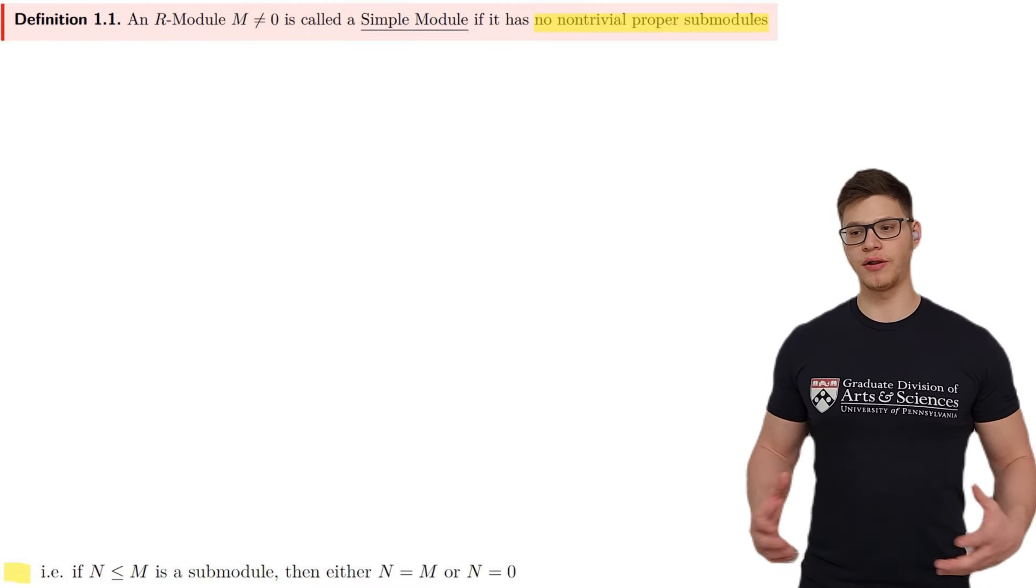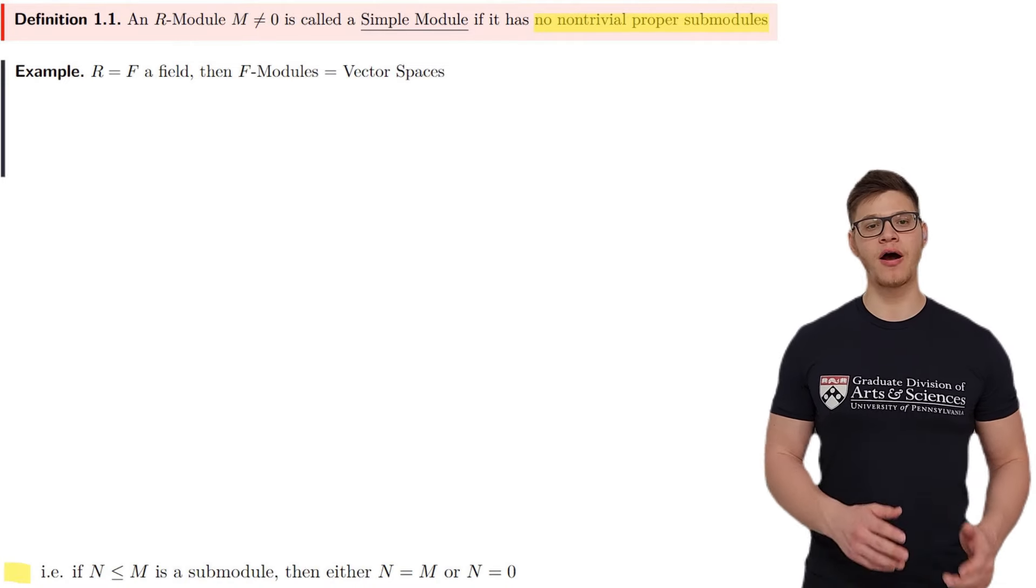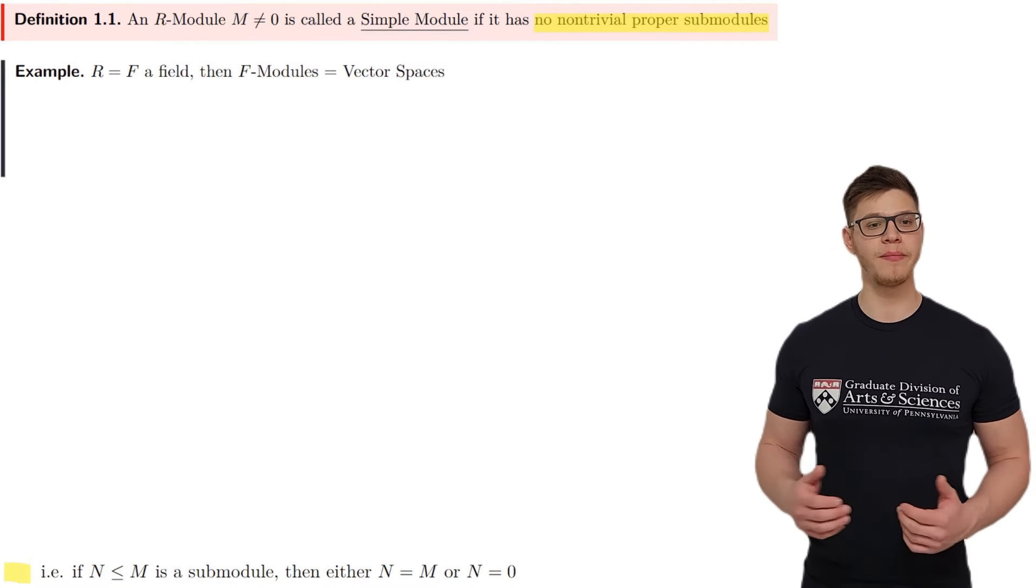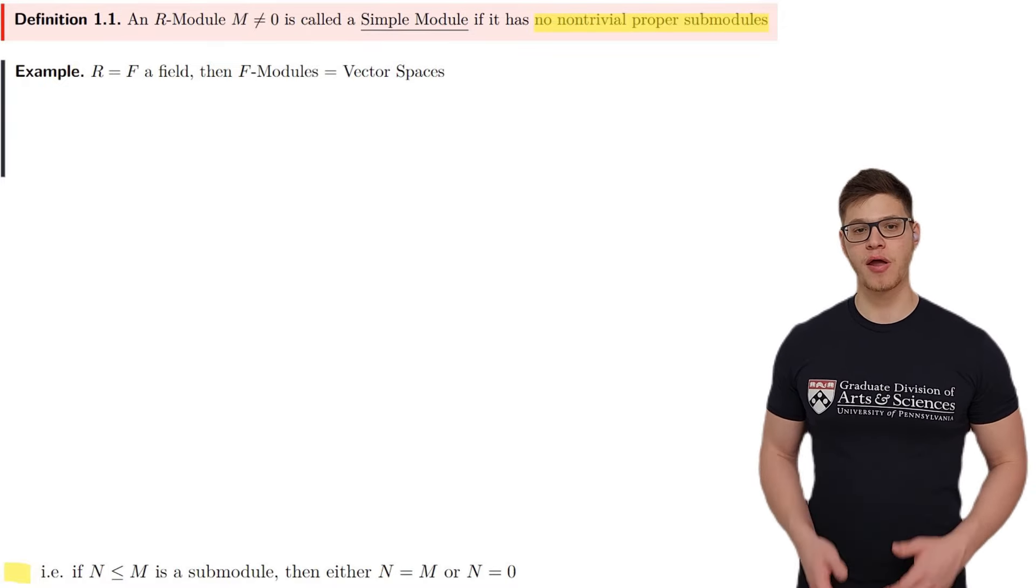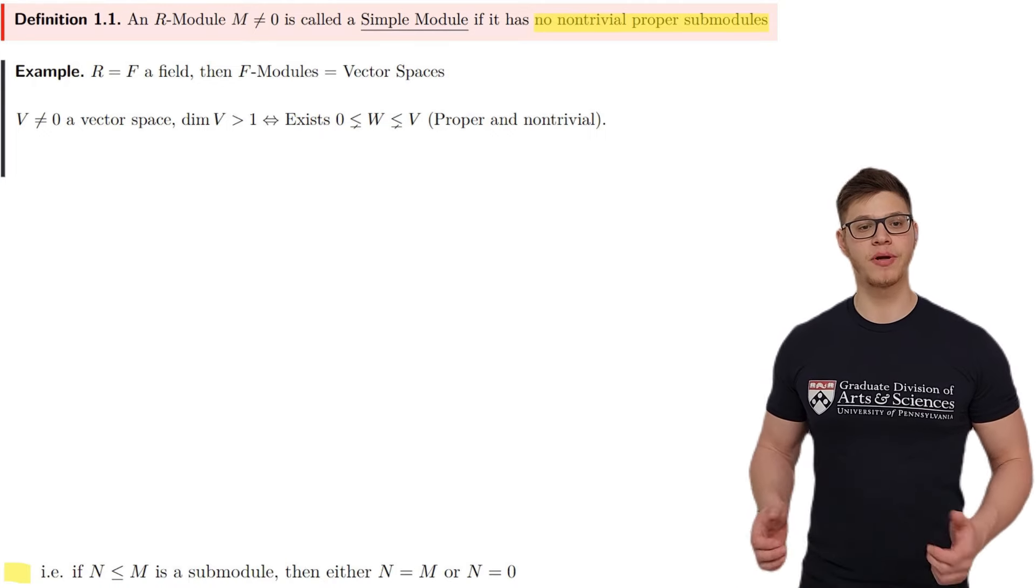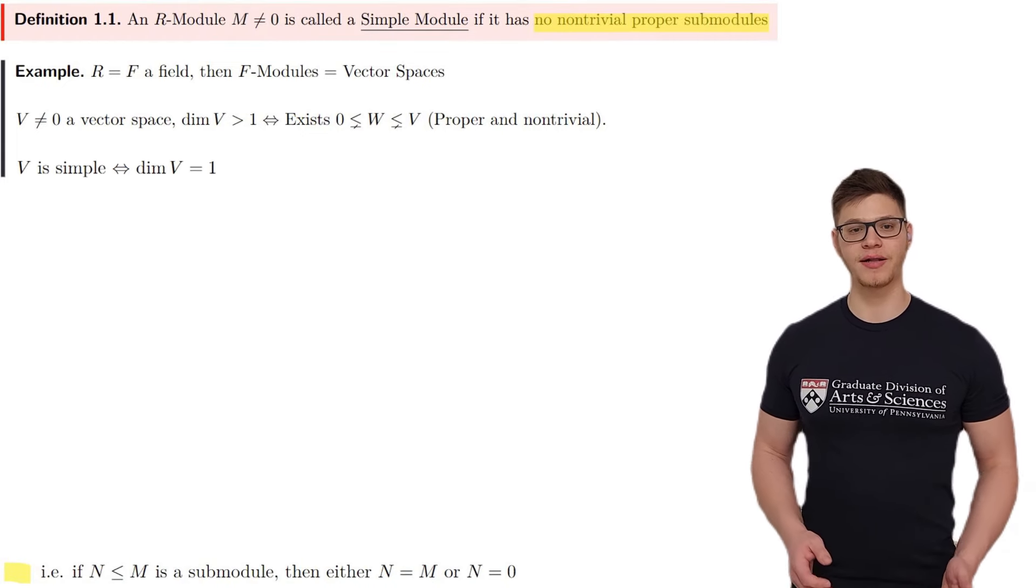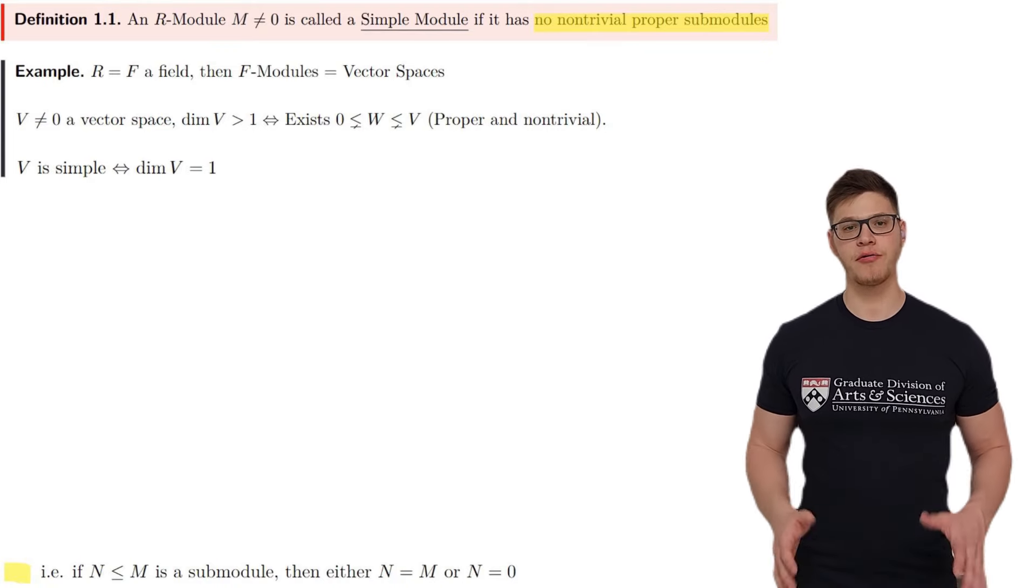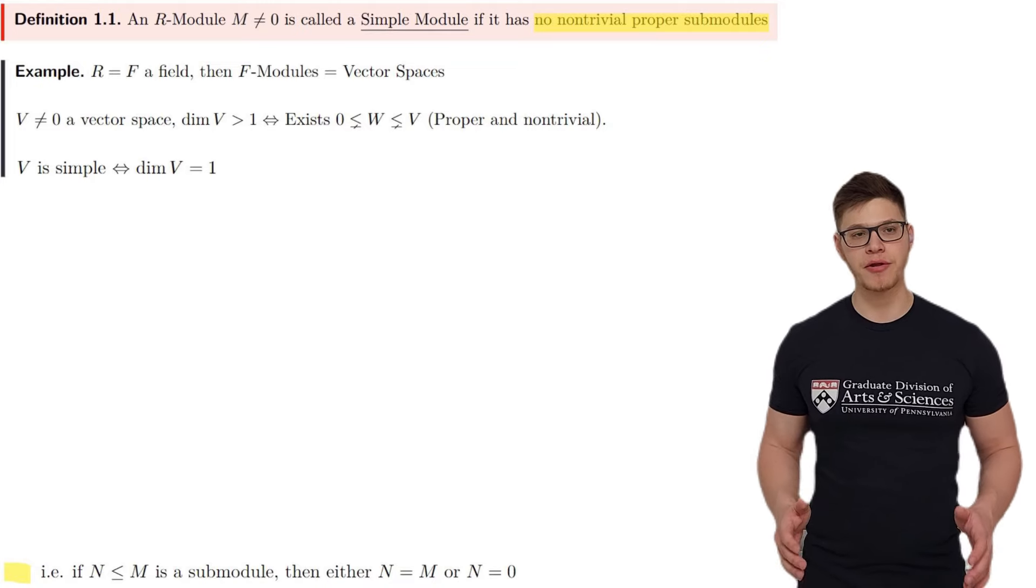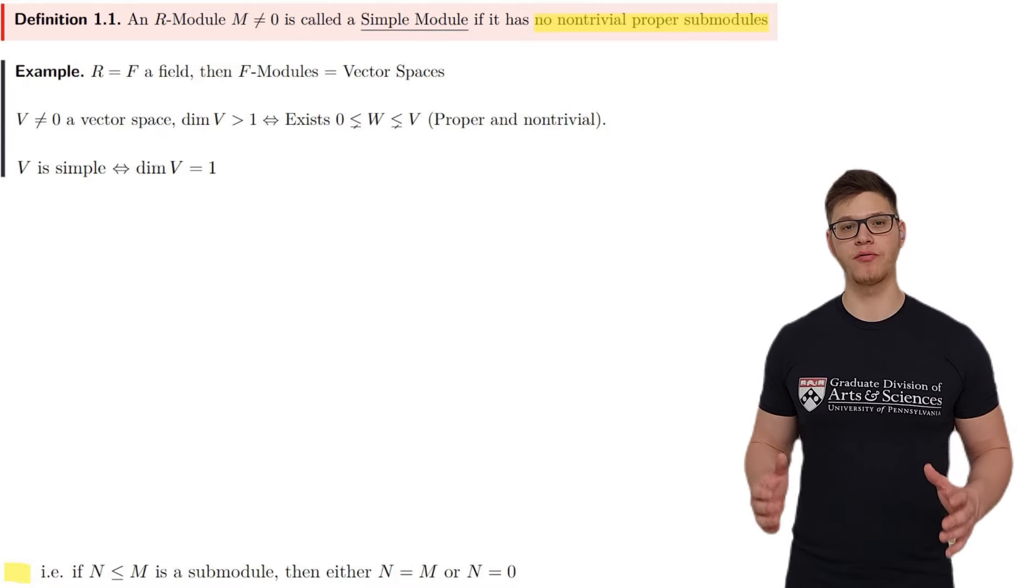We begin with a fairly trivial example, but this example will be a leading example for us as to what properties we expect simple modules to follow. Vector spaces. So, if R is a field, which we'll call F, then modules over R are just vector spaces, and every vector space of dimension more than one has a proper non-trivial subspace, i.e., proper non-trivial submodule. So, the simple modules are exactly the one-dimensional vector spaces. Simple modules are, in many ways, generalizations of one-dimensional vector spaces, and we'll see that they have a lot of similar properties and play similar roles in both theories.